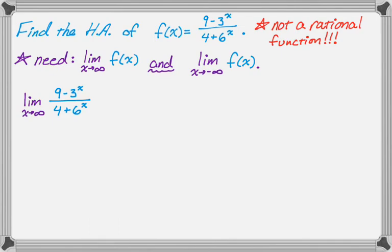Let's do the problem. We're going to look at the limit as x approaches infinity of (9 - 3^x) / (4 + 6^x). If you think about it: 3^x, as x goes to infinity, is definitely infinite, so the top is 9 minus an infinite value — negative infinity. And 4 + 6^x goes to positive infinity. So we have negative infinity over infinity — that's a L'Hôpital's situation.